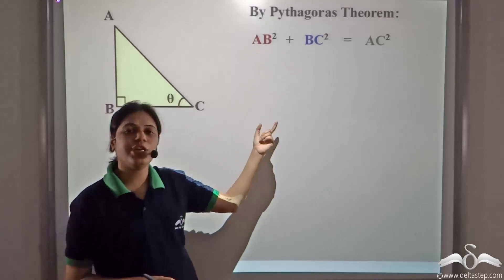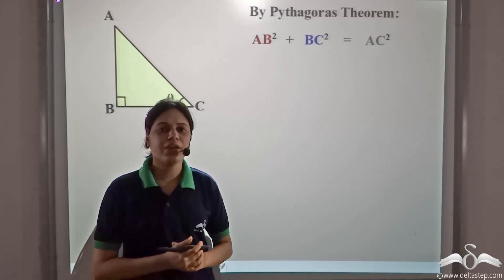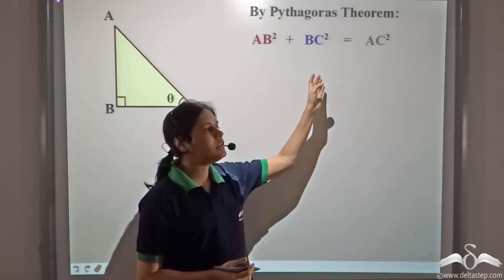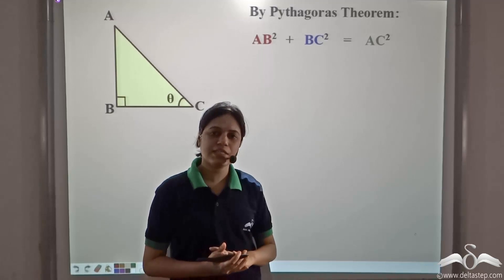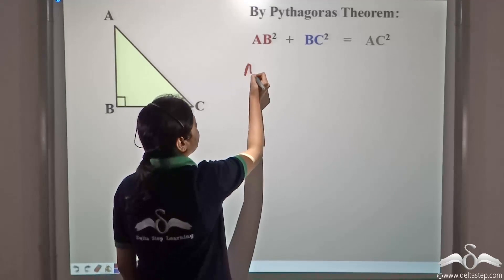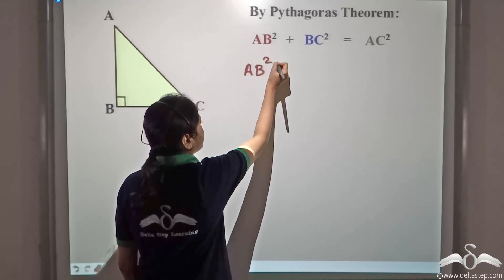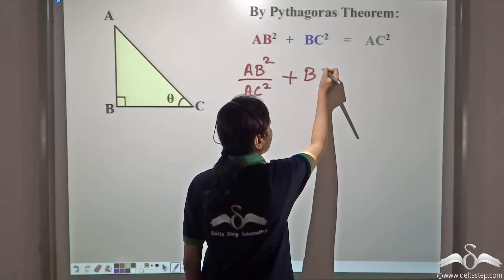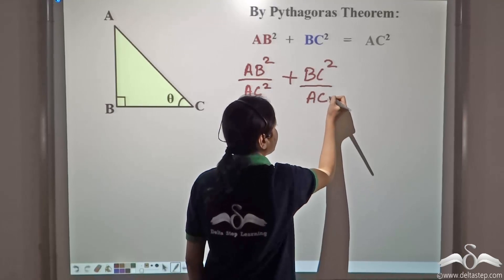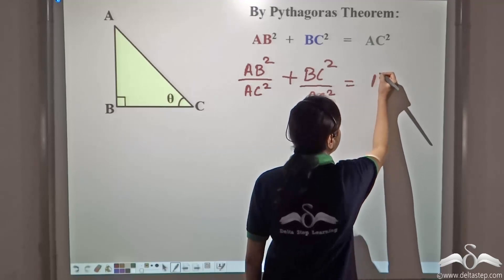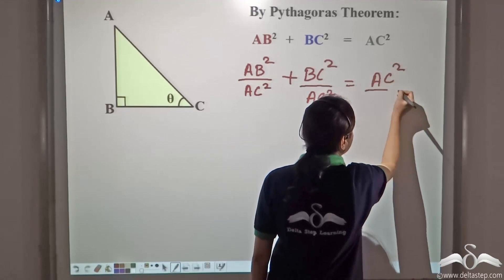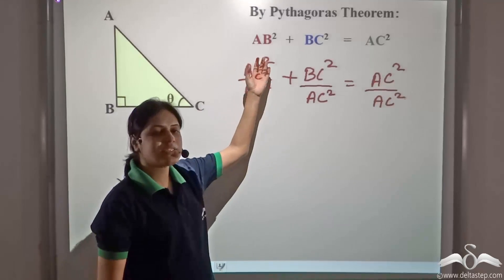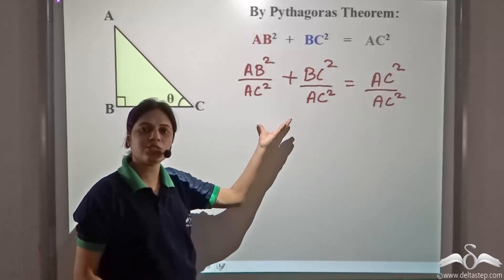Now, let us see if we can rewrite the Pythagoras theorem in terms of trigonometric ratios. So, let us divide all the three terms by AC². We have AB² divided by AC² plus BC² divided by AC² equal to AC² divided by AC². That is, I have divided the left-hand side as well as the right-hand side by AC².